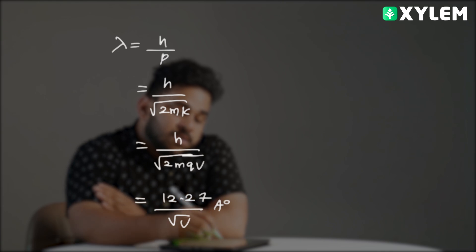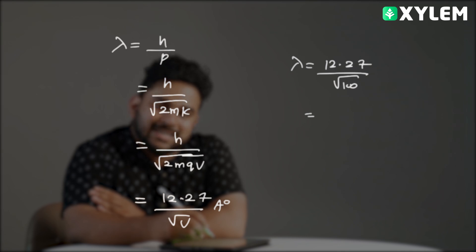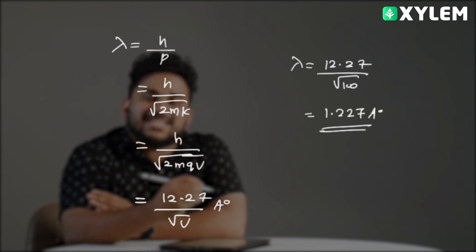In this question, potential value is given. So lambda equals 12.27 divided by root 100. Root 100 is 10, so answer is 1.227 angstrom. Option D is the right answer.